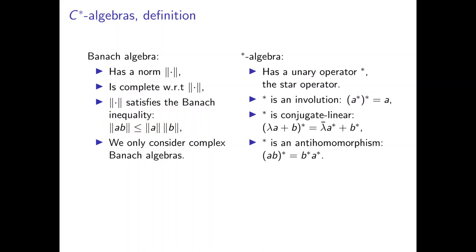A star algebra is an algebra equipped with a unary operator called the star operator. This operator is an involution: applying it twice returns the original element, so (a*)* = a. It is conjugate linear: (λa + b)* = λ̄a* + b* for any complex number λ. Finally, it is an anti-homomorphism, meaning it reverses the order of multiplication: (ab)* = b*a*.